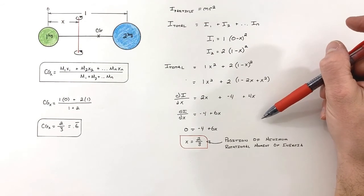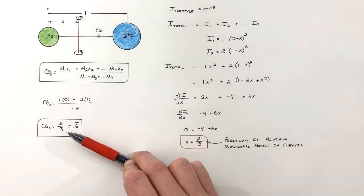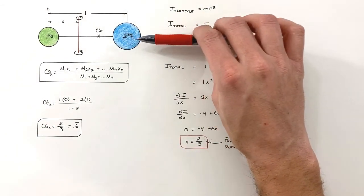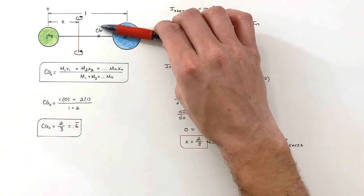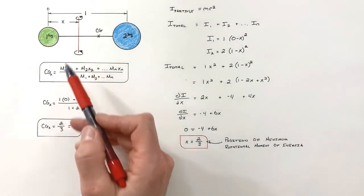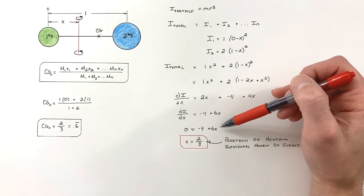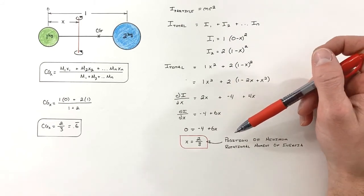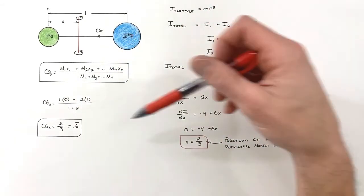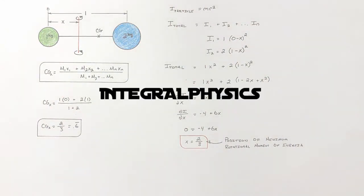This is a relatively large consequence. Because the position of minimum rotational moment of inertia equals the position of center of gravity, what we've found is that we can minimize how hard it is to rotate an object or assembly by rotating it around its center of gravity. We found a function for the rotational moment of inertia, took its derivative, set it equal to zero, and found that the moment of inertia is minimized at the position of center of gravity.